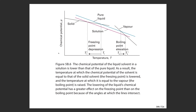Here we plot the chemical potential versus temperature for our solution. The solute does not participate in forming the solid solvent, so the chemical potential of the solid is unchanged when you make a solution. Likewise, the chemical potential of the solvent vapor is unaffected by the non-volatile solute. However, for the liquid phase—represented by the blue line—the chemical potential of the pure solvent will be lowered by the presence of the solute, dropping down to the red line.